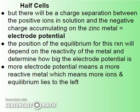There will be a charge between the positive ions in the solution and the negative charge accumulating on the zinc metal. As the positive ions move off, electrons accumulate on the zinc metal — this is referred to as electrode potential. The position of this equilibrium depends on the reactivity of the metal: the more reactive the metal, the bigger the electrode potential, meaning more ions and the equilibrium lies further to the left.